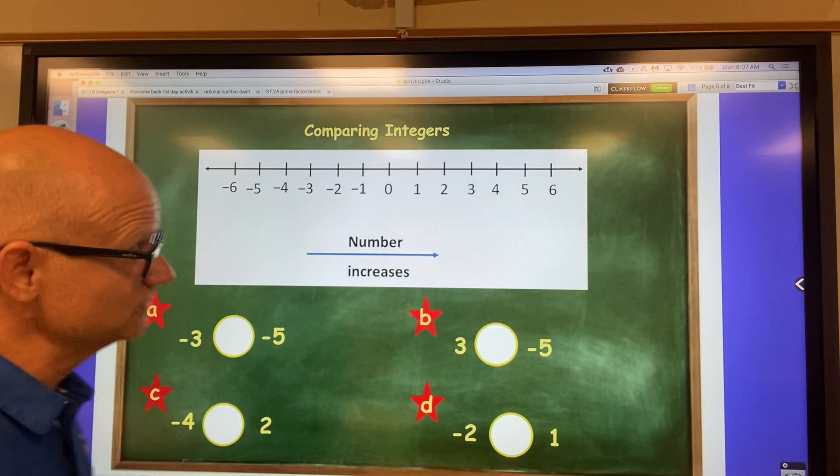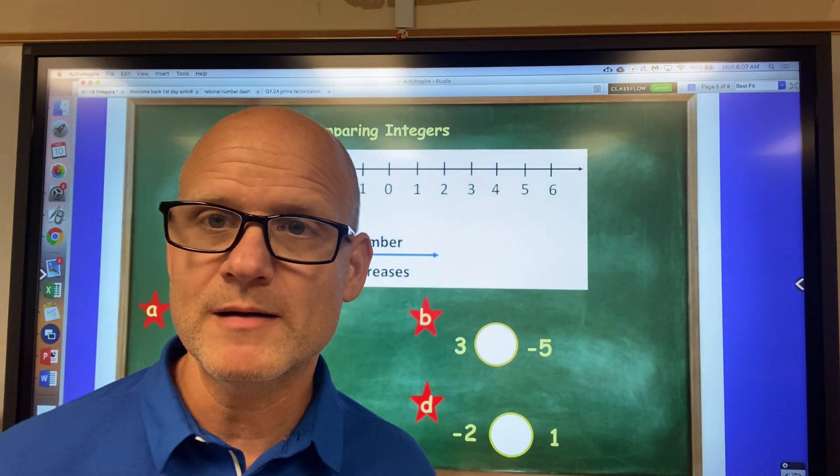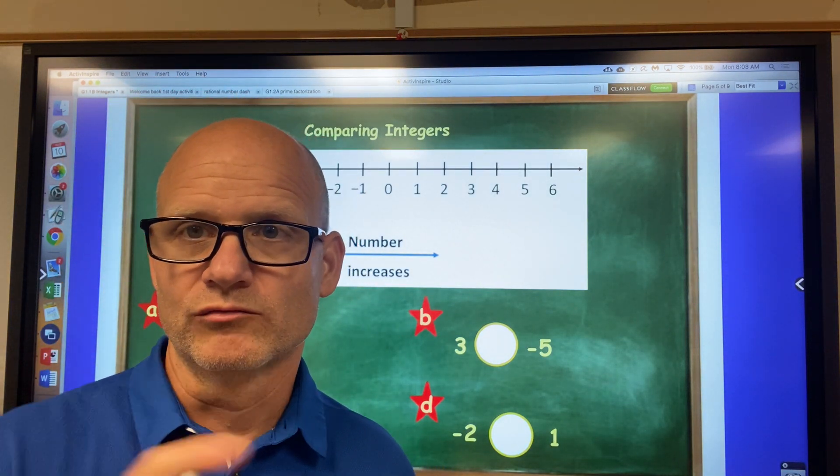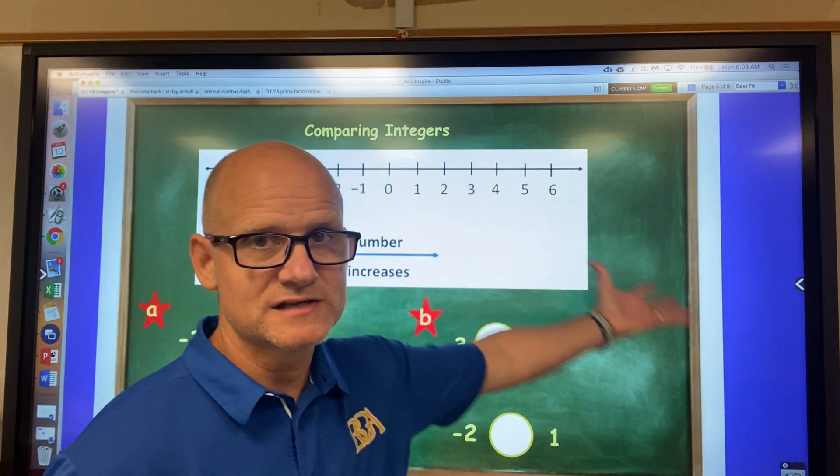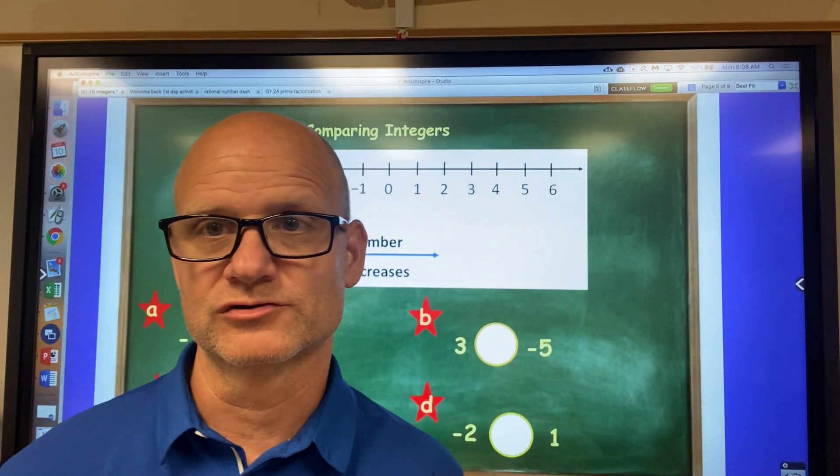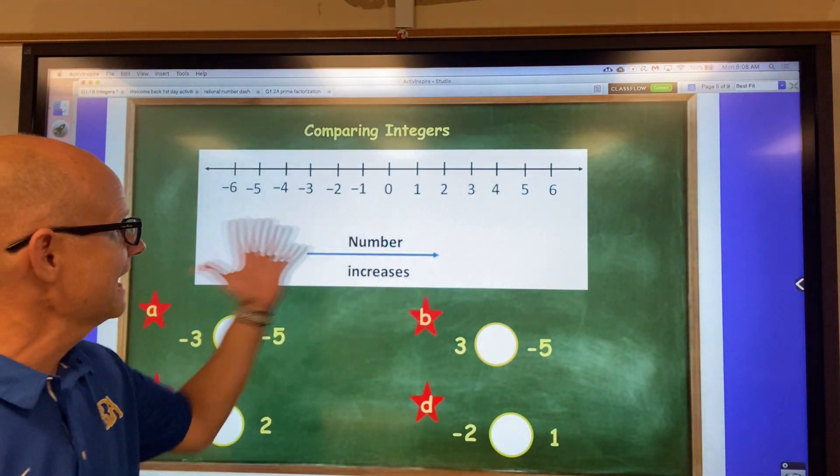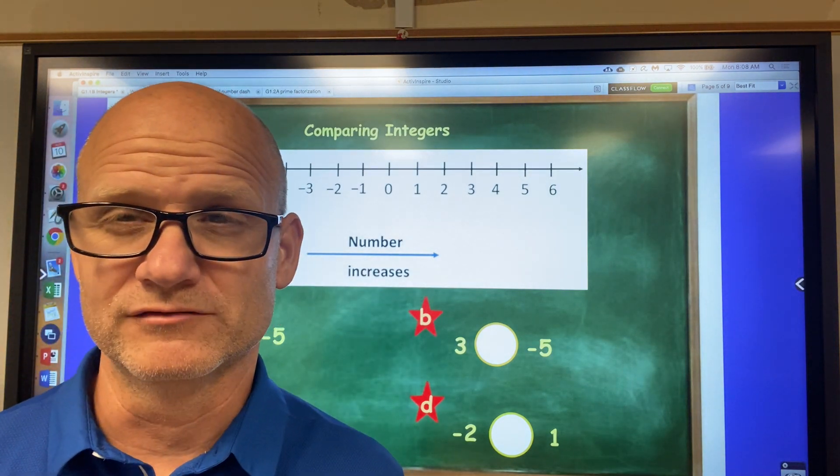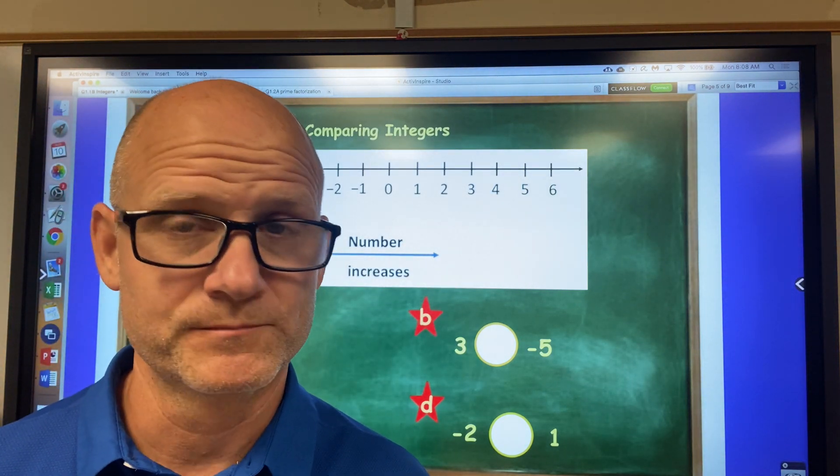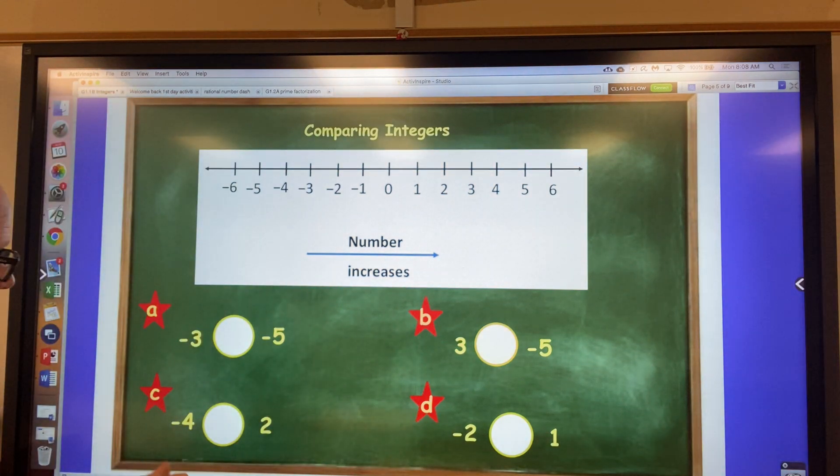And then the last thing we're going to do is just compare these integers. Remember, as you go to the right on the horizontal number line, the value gets larger and larger. As you go to the left on the horizontal number line, the value gets less and less. So here, I want you to write down these four problems, A, B, C, and D.